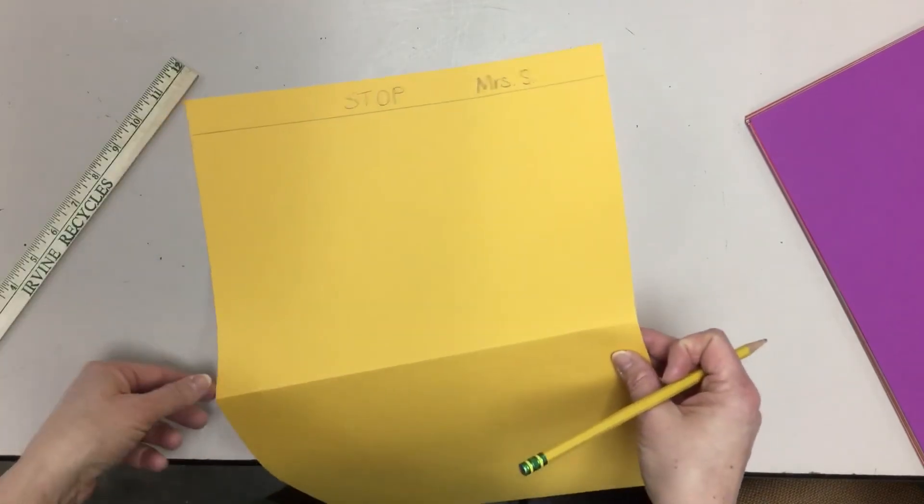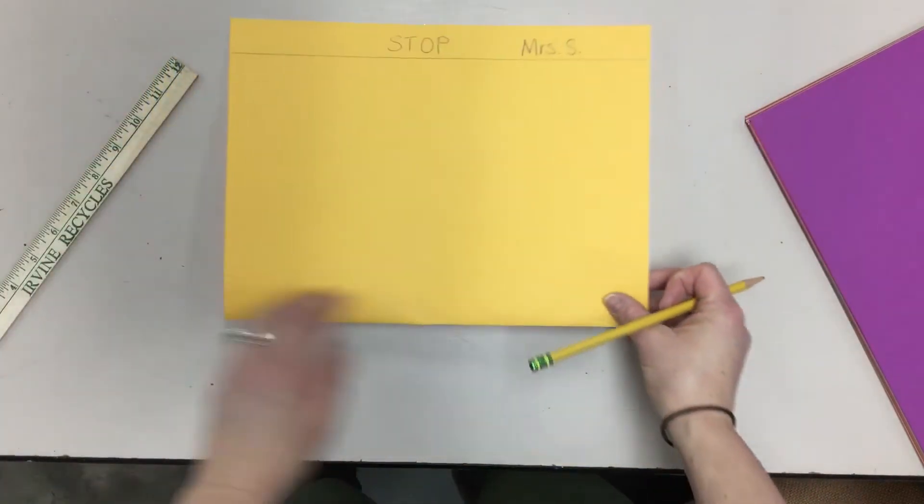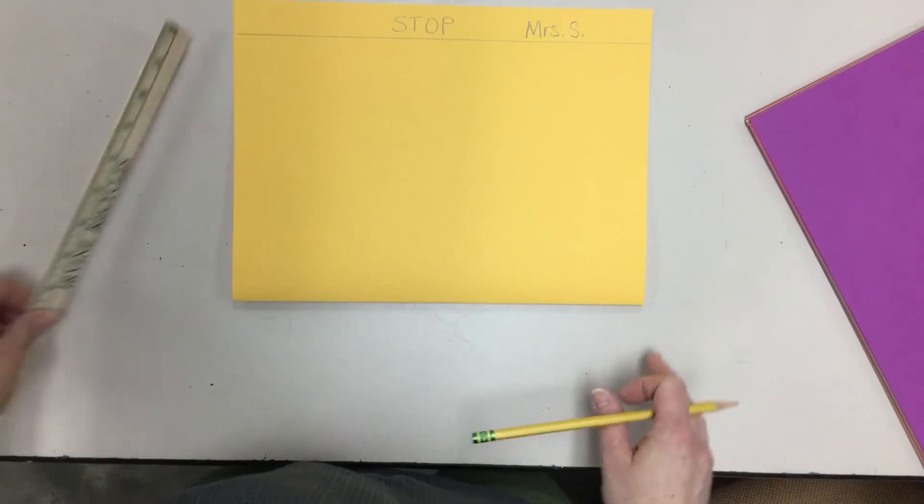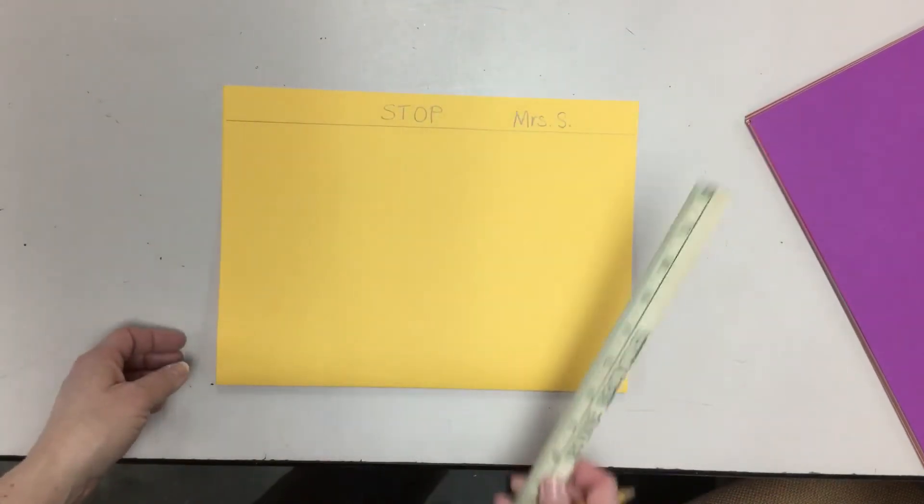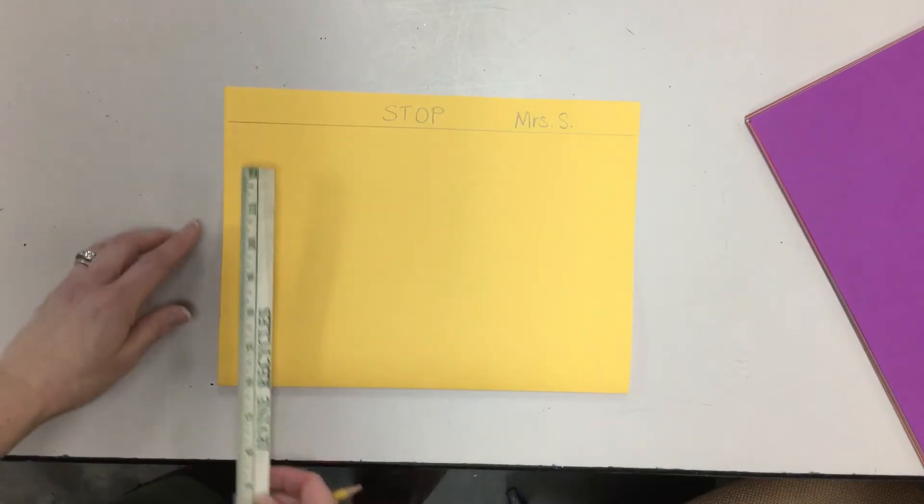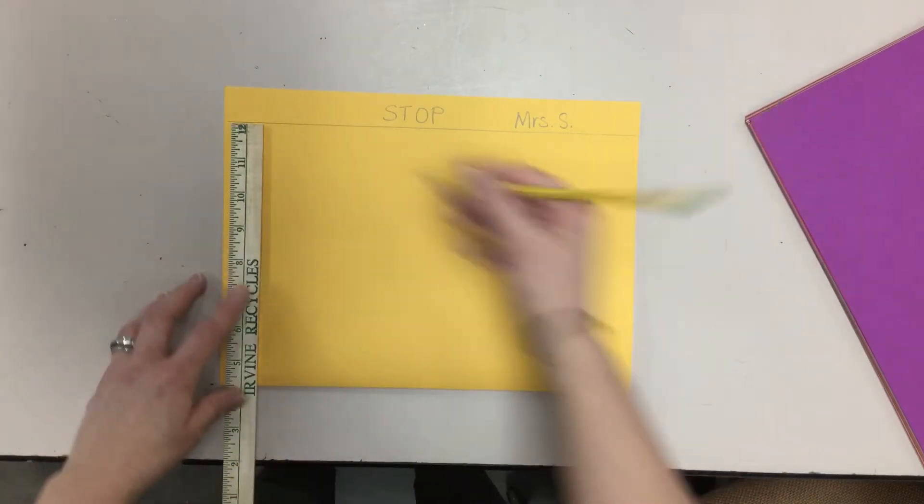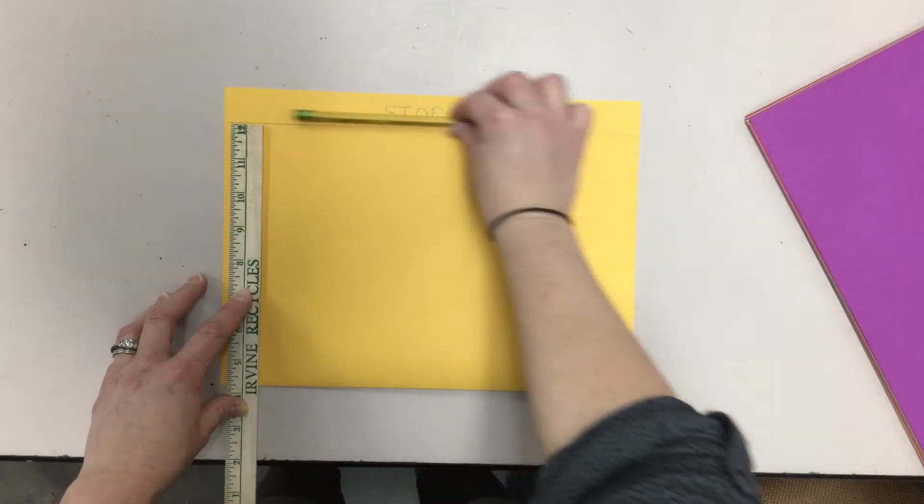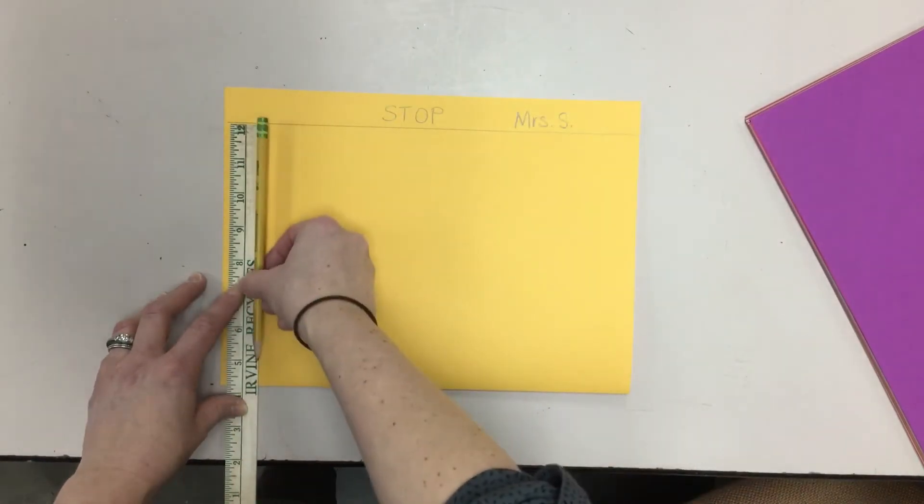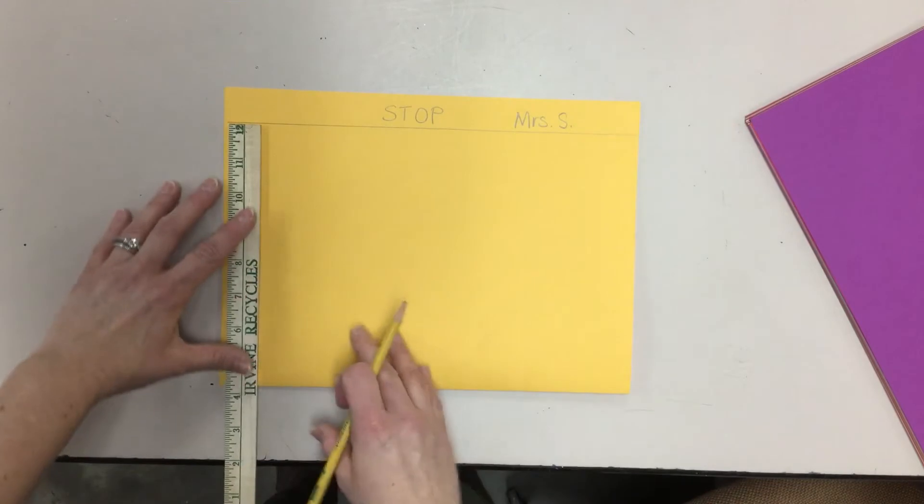Then I'm going to fold this back up and I'm going to make lines with my ruler that are perpendicular to my first line. So perpendicular means there's a 90 degree angle right here. So this is going horizontal, this line, and these lines are going to go vertical the opposite way.